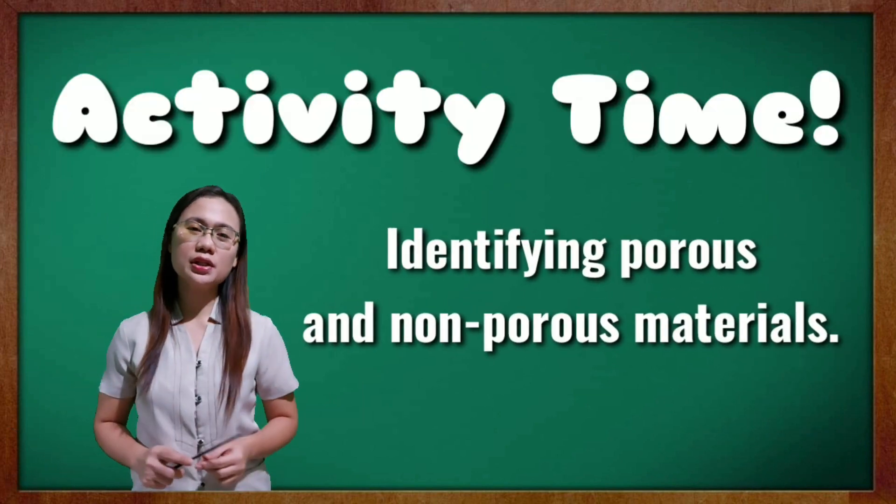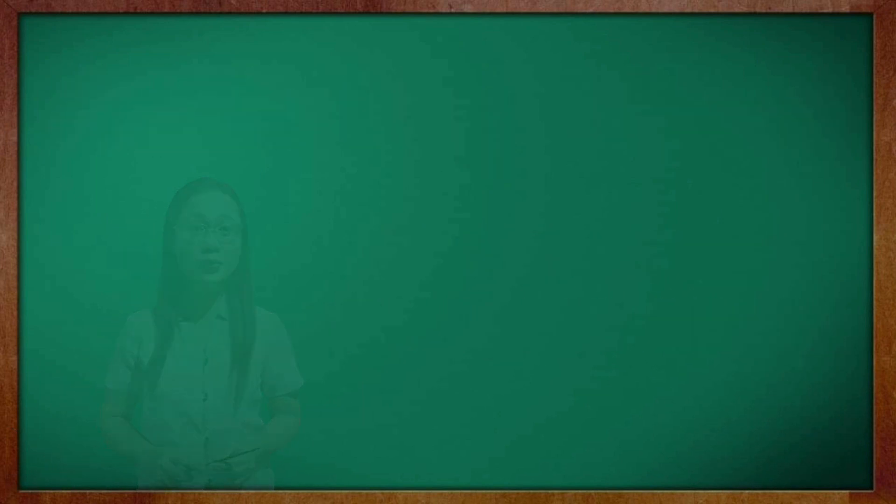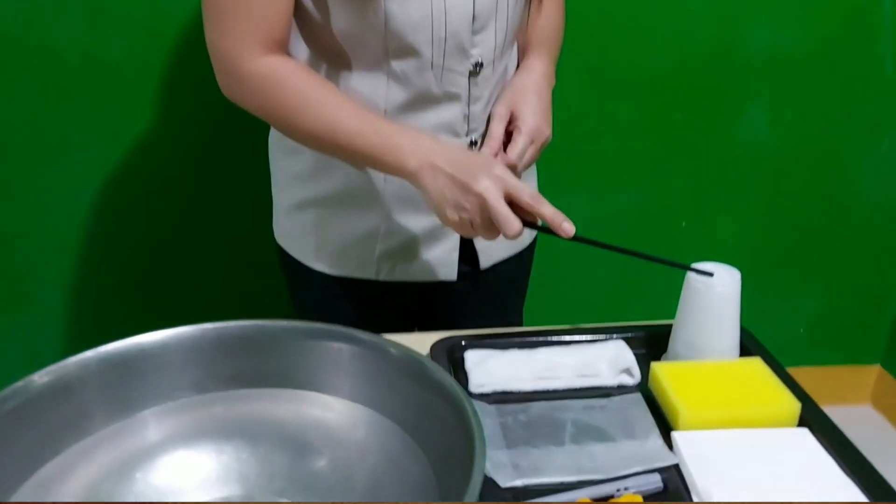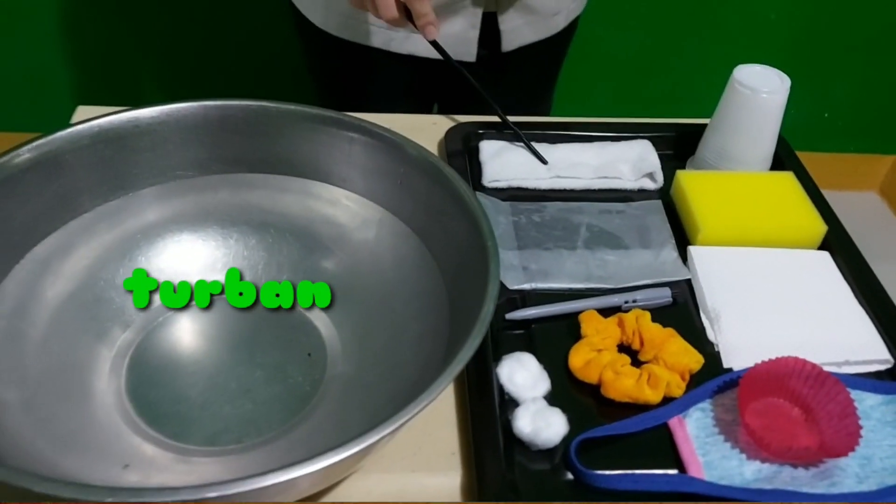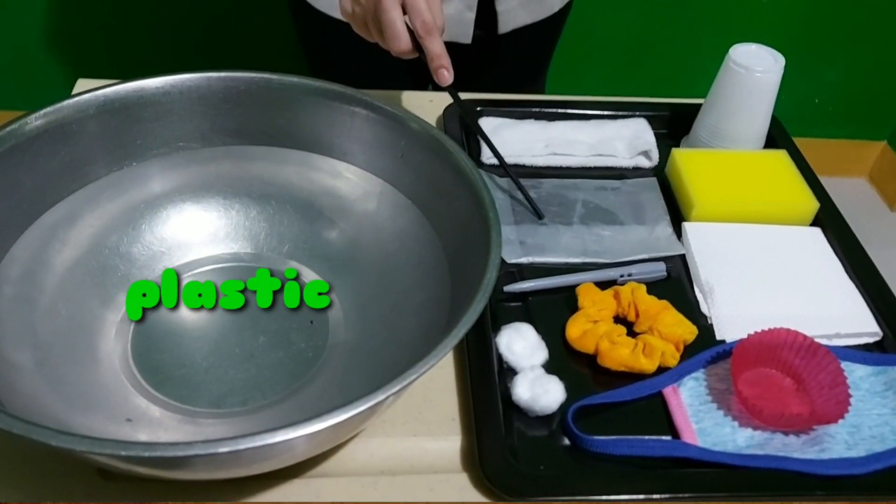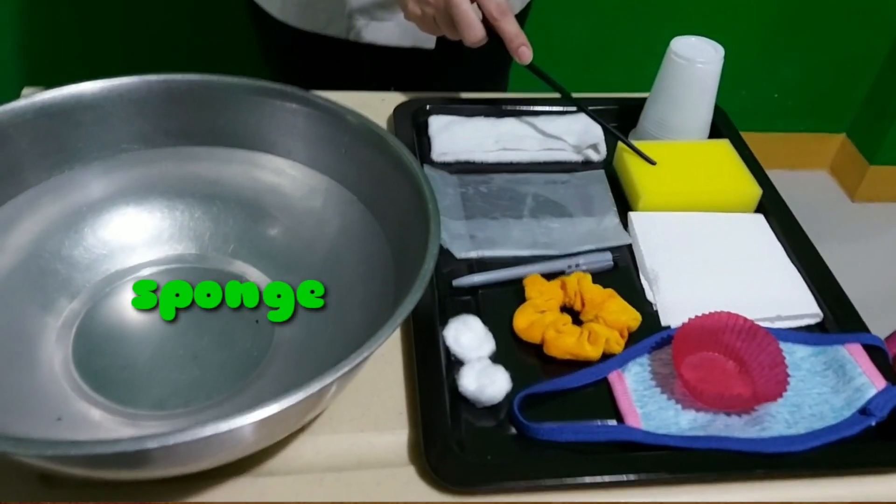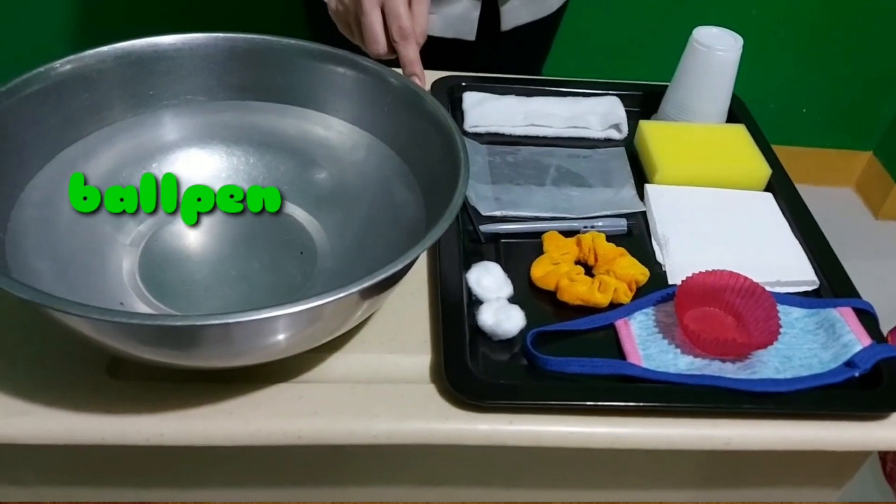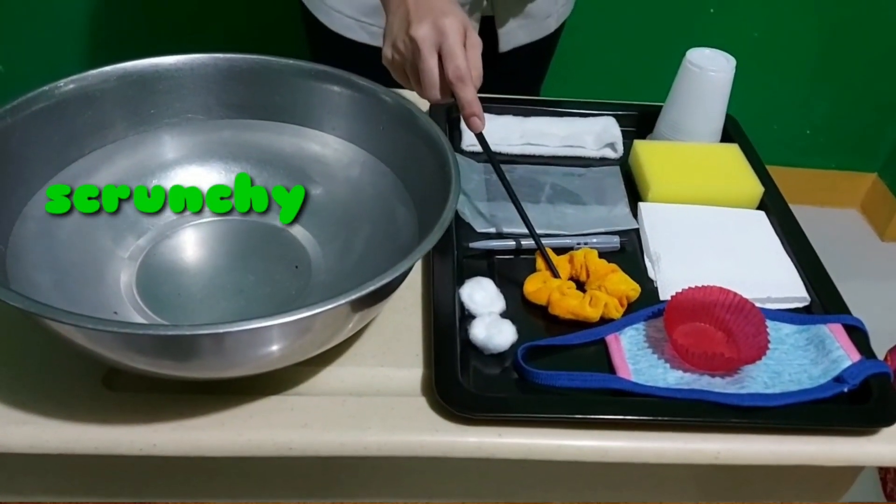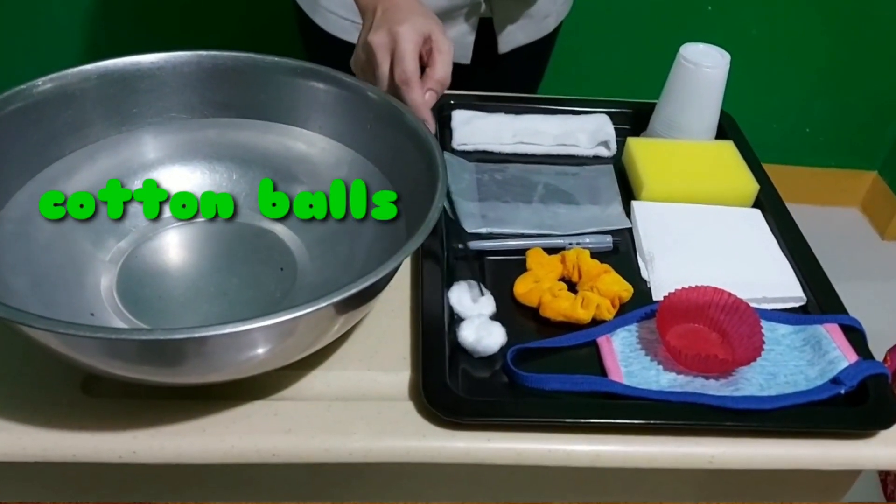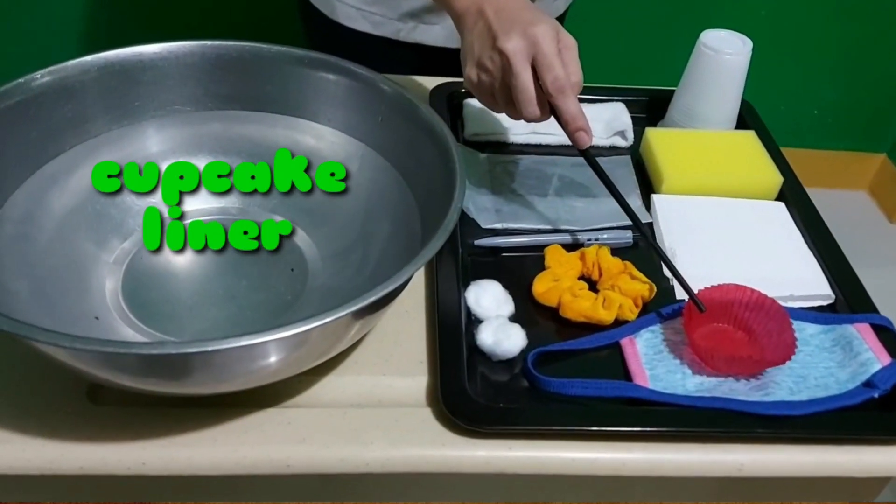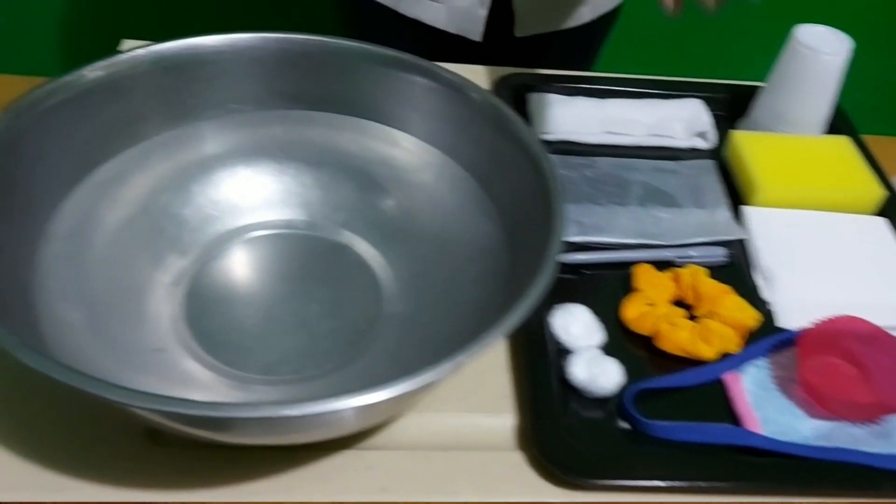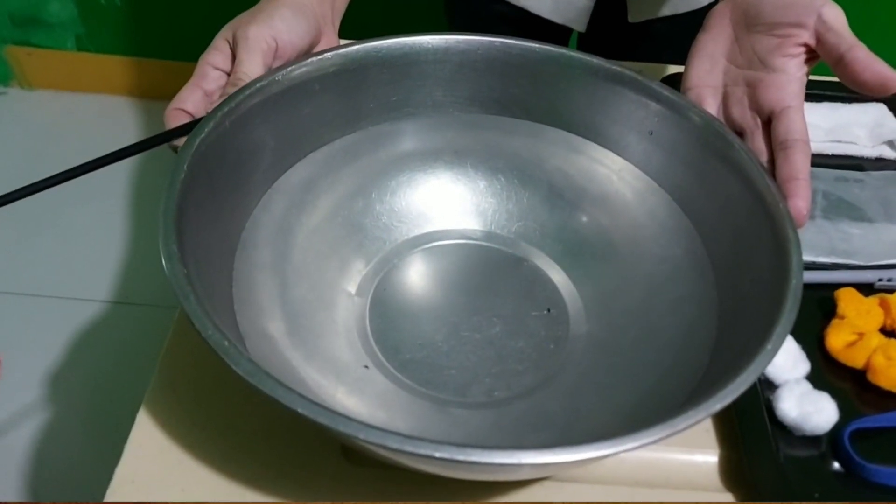Class, the materials that we are going to use are the following. We have the plastic cup, turban, plastic, sponge, tissue paper, ball pen, scrunchie, cotton balls, cupcake liner, and face mask. And we have also the basin of water.